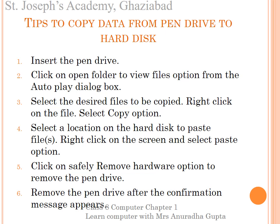Learn how to copy data from pendrive to hard disk. Step 1: insert the pendrive. Step 2: click on Open Folder to View Files option from the AutoPlay dialog box. Step 3: select the desired files to be copied, right click on the file and select Copy option. Step 4: select a location on the hard disk to paste the file, right click on the screen and select Paste option. Step 5: click on Safely Remove Hardware option to remove the pendrive. Step 6: remove the pendrive after confirmation message appears.